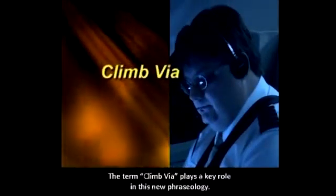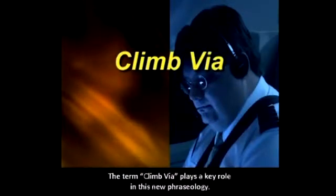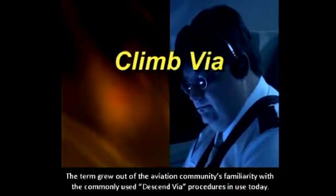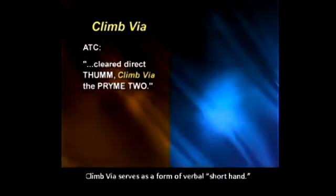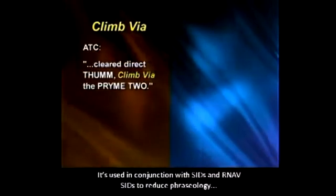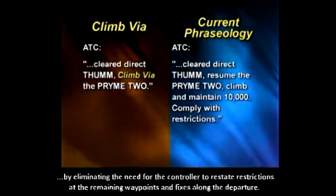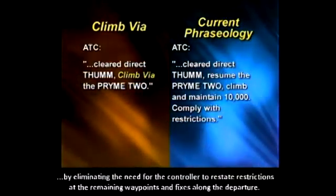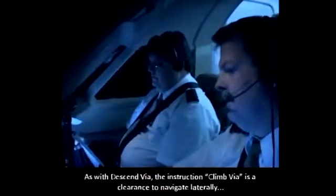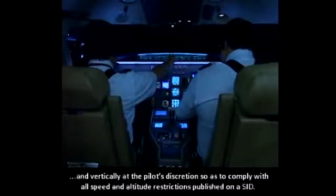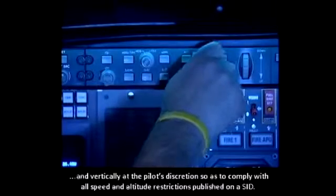The term "climb via" plays a key role in this new phraseology. The term grew out of the aviation community's familiarity with the commonly used "descend via" procedures in use today. Climb via serves as a form of verbal shorthand. It is used in conjunction with SIDs and RNAV SIDs to reduce phraseology by eliminating the need for the controller to restate restrictions at the remaining waypoints and fixes along the departure. As with "descend via," the instruction "climb via" is a clearance to navigate laterally and vertically at the pilot's discretion so as to comply with all speed and altitude restrictions published on a SID.